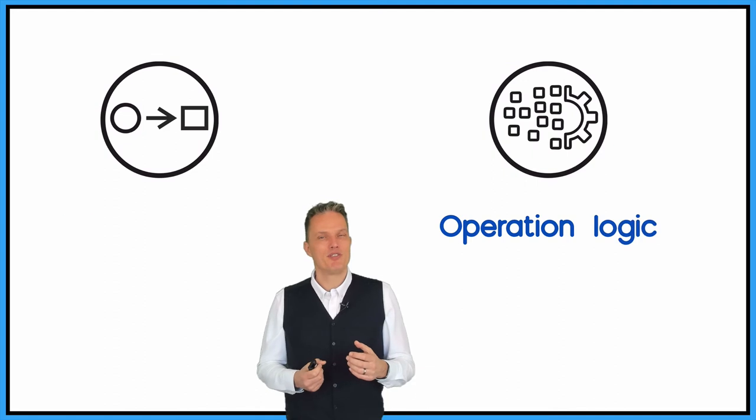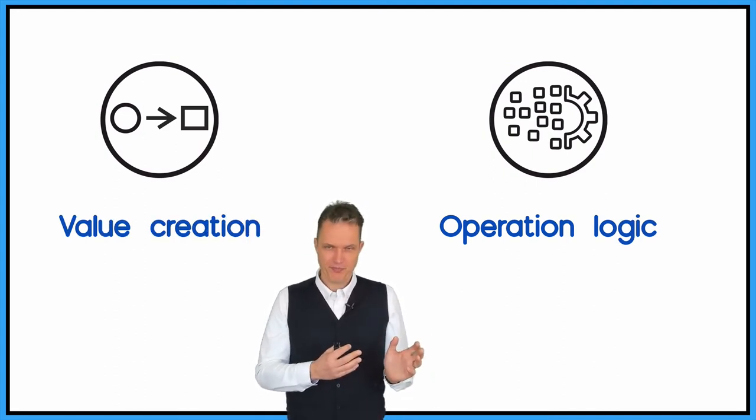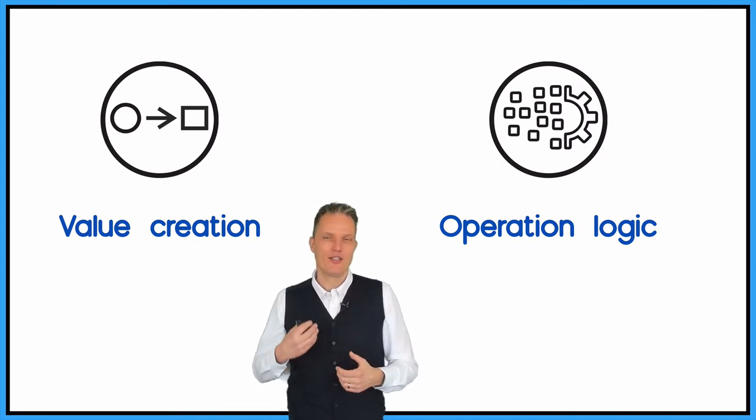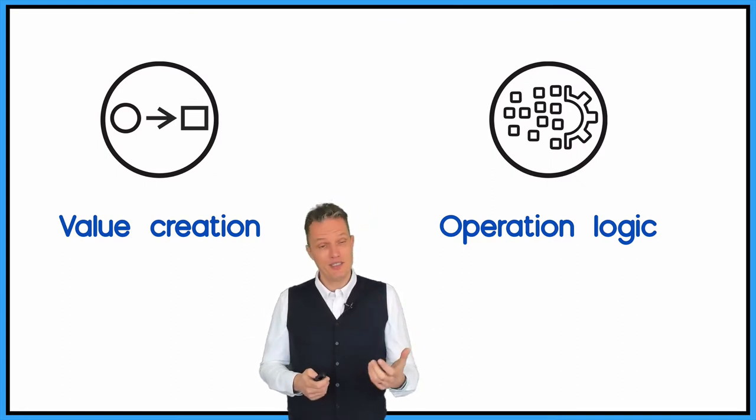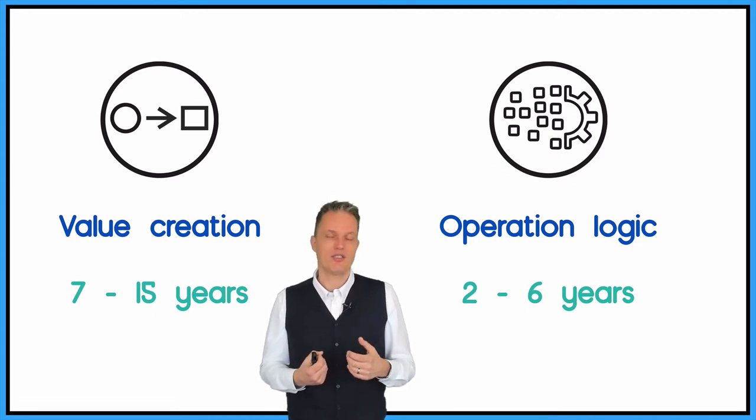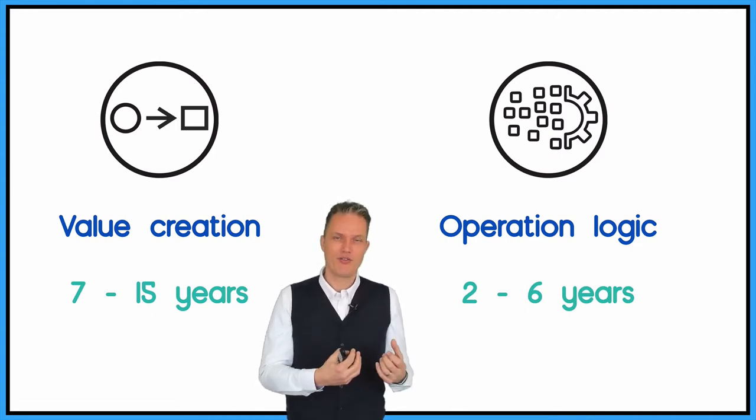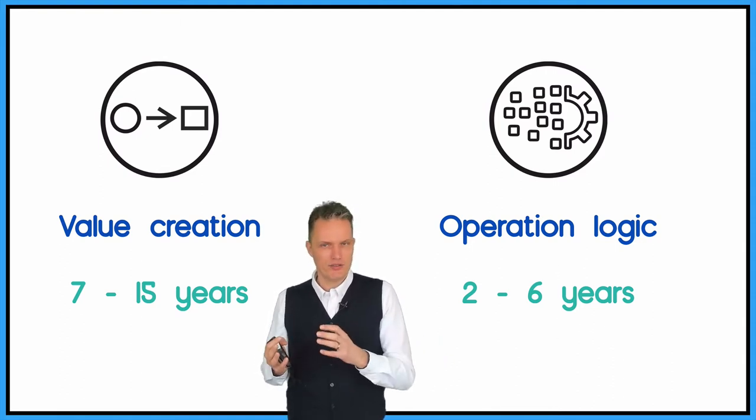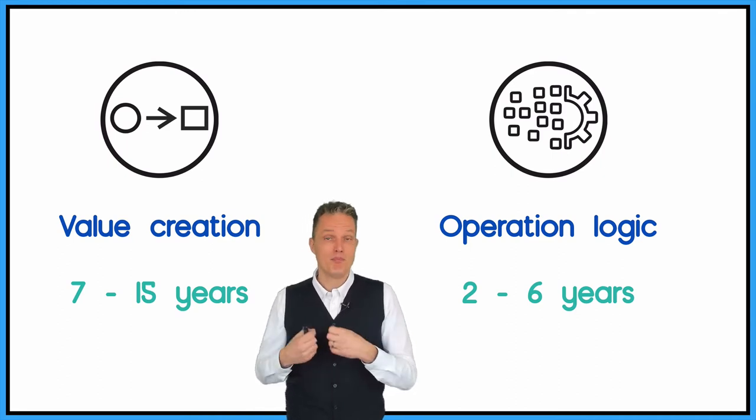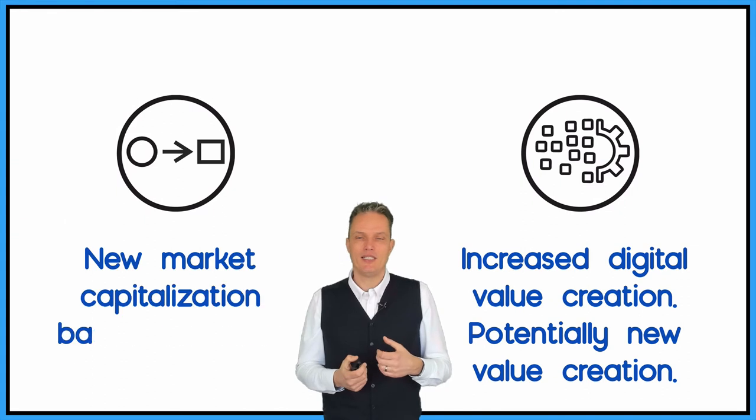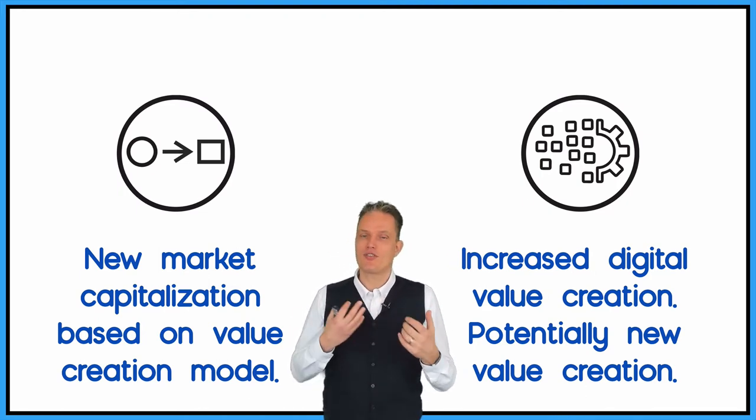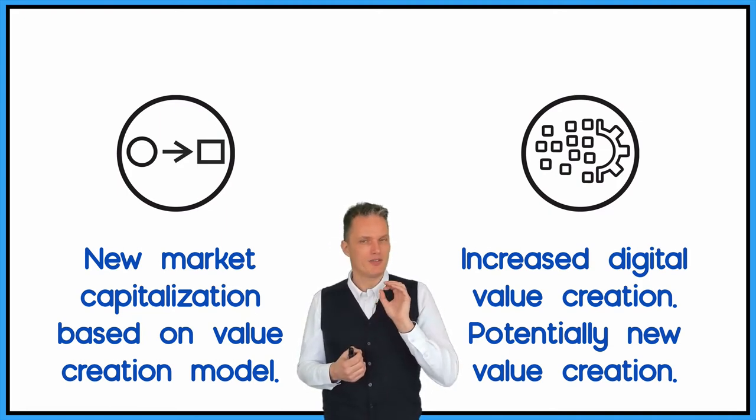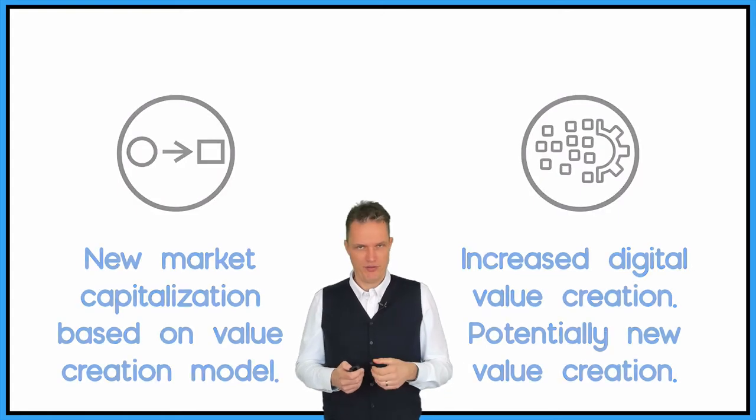So let us take a look at the differences between digital transformation and value creation. Digital transformation is all about changing the operating logic of your company. But as transforming your company, it's about building a new value creation logic. It takes a lot longer to do the value creation logic to do the transforming of your company. It will take about 7 to 15 years. A digital transformation of your company can be done much quicker, like in 2 to 6 years. So eventually, you will get a new market capitalization based on a new value creation model. While digital transformation, most of the time, is just an increase of digital value creation. It can potentially create new value, but most of the time it's digital value which has been created.